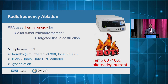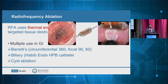RFA is used in multiple areas — for example, it's commonly used for atrial fibrillation and cardiac arrhythmias, chronic back pain, nerve ablation, sometimes arthritis pain, and local treatments for cancers like HCC and renal cancers. Within GI, we're very familiar with RFA and have a lot of experience using it for Barrett's esophagus and dysplasia, with different catheters of different sizes and shapes now available.